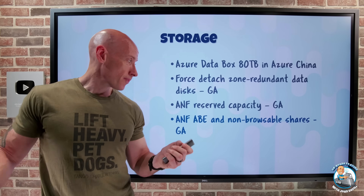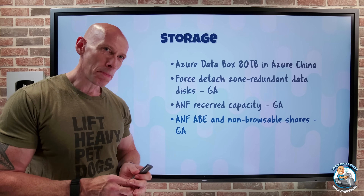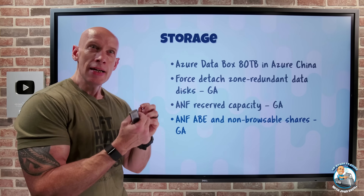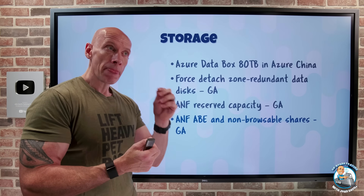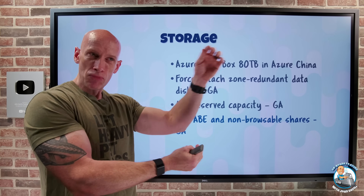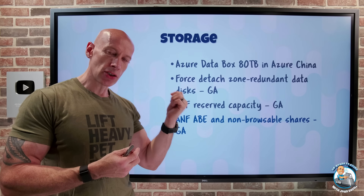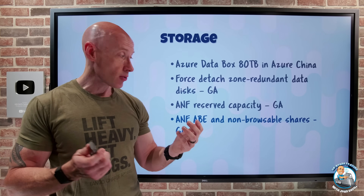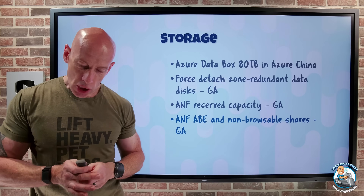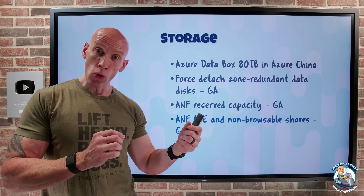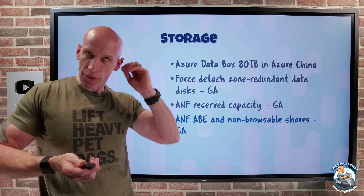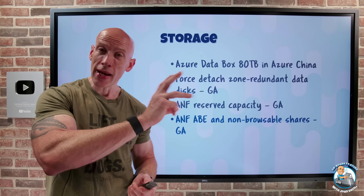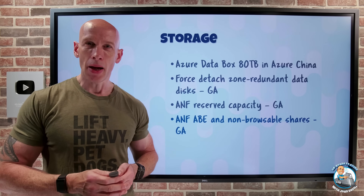Azure NetApp Files also has access-based enumeration and non-browsable shares, for your SMB and dual protocol shares. Access-based enumeration means you're only going to see the files and folders that you have permissions to — ordinarily you'd see everything and then get a permissions error when you try to select a file. If you turn on access-based enumeration, you will only see things you have permissions to. Non-browsable shares, as the name suggests, lets you specify a share to not show up when browsing the service from Windows — I'll have to explicitly specify the share to connect to it. It's not a security mechanism, it will just hide those shares — a little bit of security by obscurity.